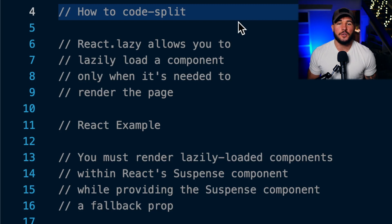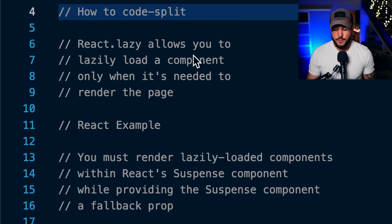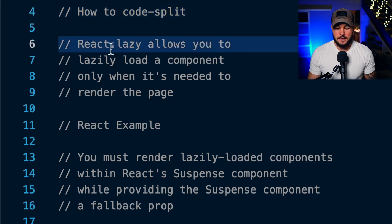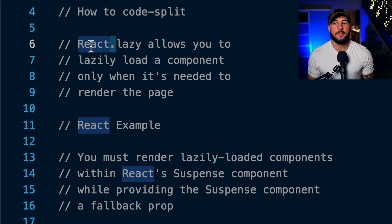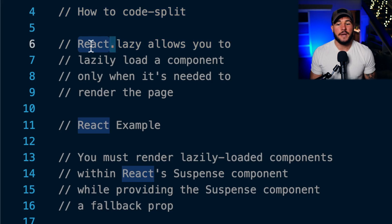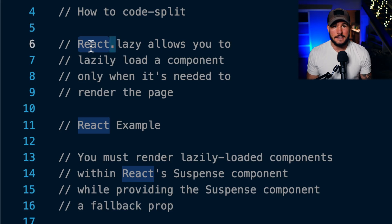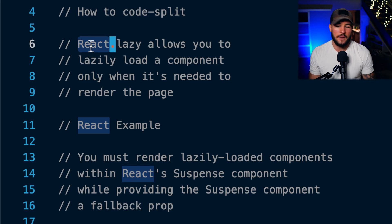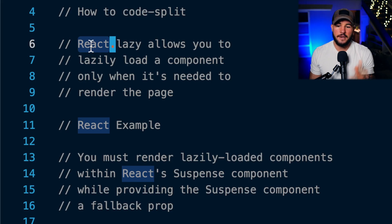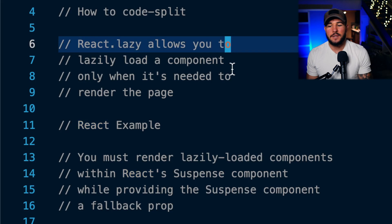So how do you actually perform code splitting within React? The way that this is done is you can use a method from React called react.lazy. You can import React from React and access the lazy method on that object, or you can just do a named import of lazy from React. Either way, you're going to use this lazy method to lazily load a component.